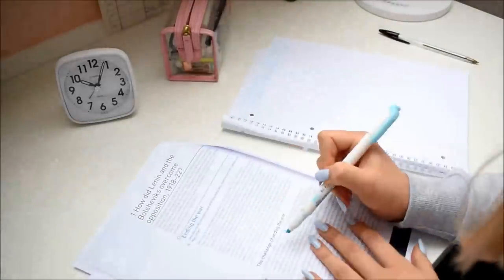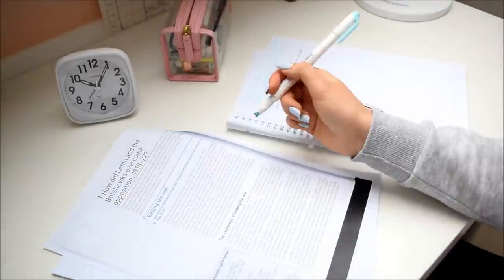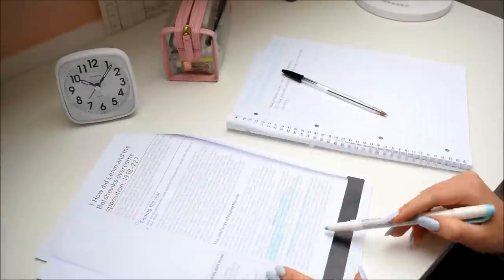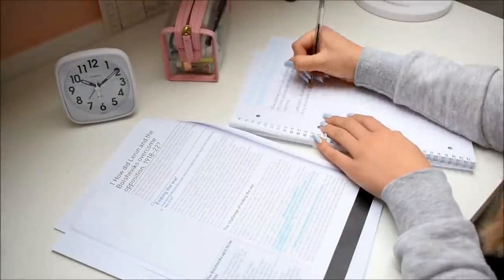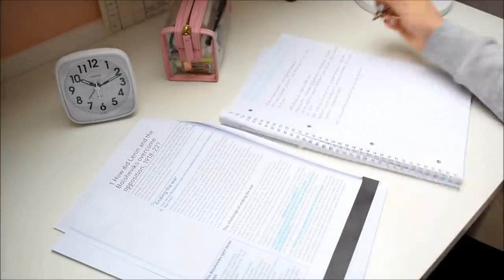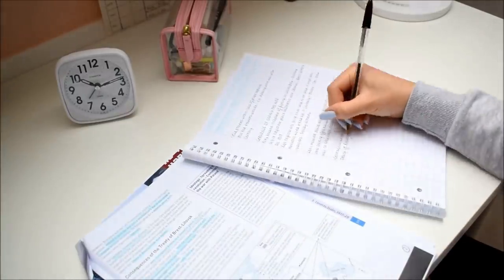After that I got on with my next homework task which was to make notes for the Russian Revolution for my History A-level. I was just going through the text and highlighting the key bits of information and then writing them down. This took me half an hour.